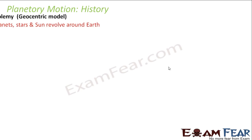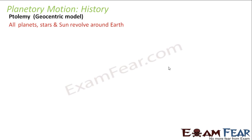Let us quickly look at what work other people did and how Newton got information from their work. This work on planetary motion started long back with a scientist named Ptolemy, who gave a model known as the geocentric model. Geo means earth, so geocentric means earth-centric. He told that all planets, stars, and the sun revolve around the earth — he thought earth was the center.